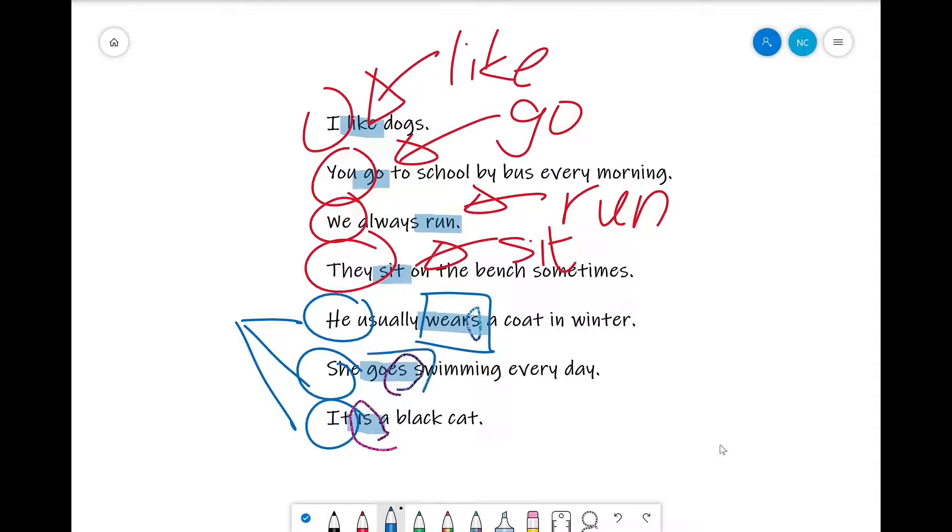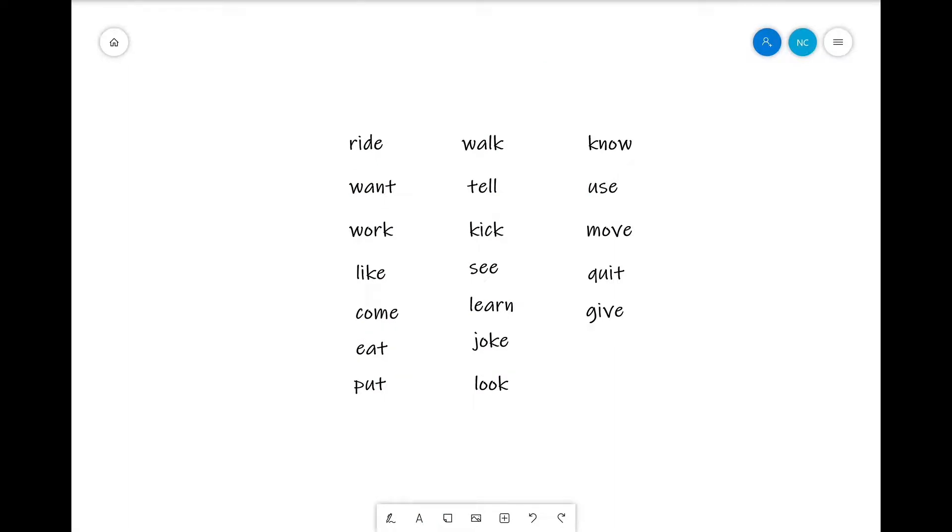And what we do to the verbs. So the rule is easy. What you need to do is add an s at the end of the verb for most cases. So from ride to rides, want to wants, work to works, like to likes, come to comes, eat to eats, put to puts, walk to walks, tell to tells, kick to kicks, see to sees, learn to learns, joke to jokes.